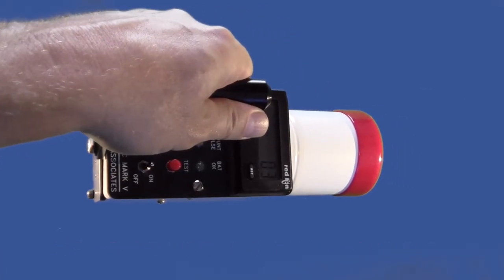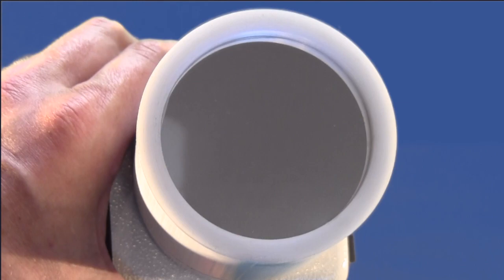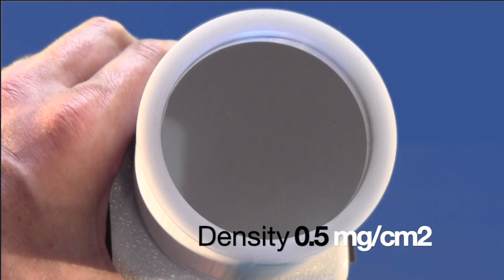For gamma x-ray survey, we keep the beta shield on. If we remove the beta shield, we see a thin mylar window, which is 2 inches in diameter and 0.5 milligrams per centimeter squared in density. It's very fragile, so be careful.